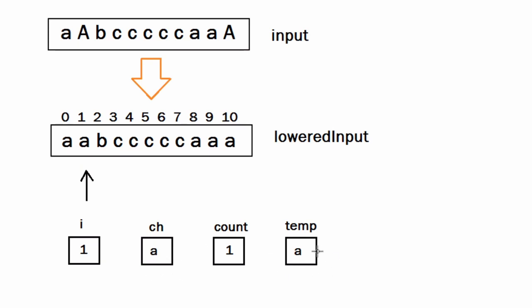Now we simply compare ch and temp. If both are equal, we increase the count by 1. In this case ch and temp are both A so count becomes 2.